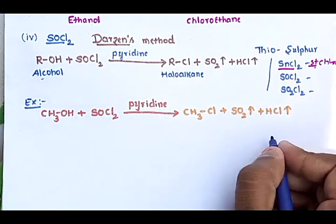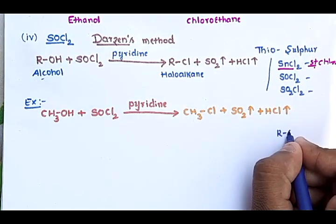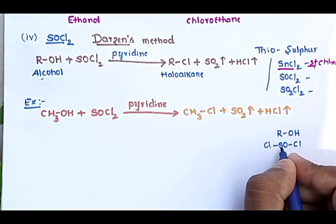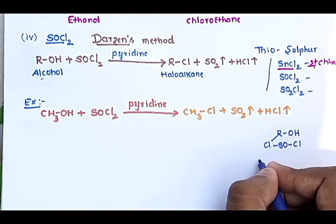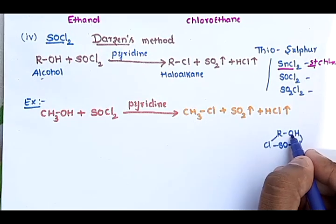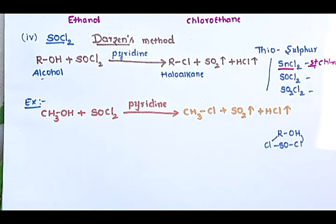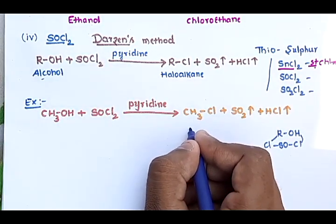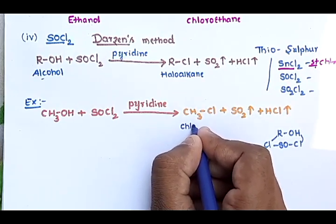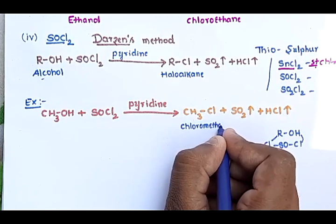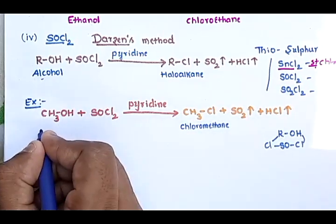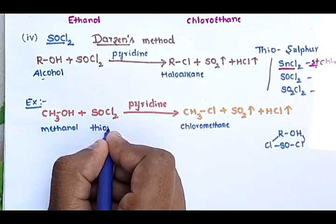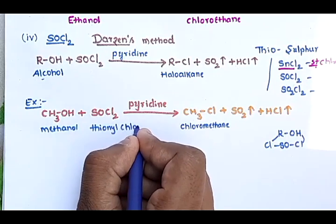Writing it out: R-OH reacts with SOCl₂ (O-Cl, Cl), giving R-Cl and HCl and SO₂. This is Darzen's method — the best method for the preparation of haloalkanes. For example, chloromethane is obtained from methanol reacted with thionyl chloride.